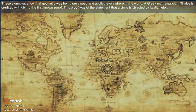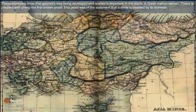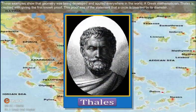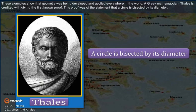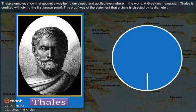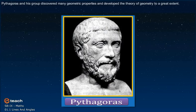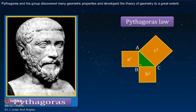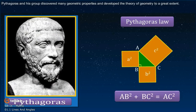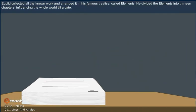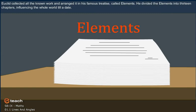These examples show that geometry was being developed and applied everywhere in the world. Thales, a Greek mathematician, is credited with giving the first known proof — that a circle is bisected by its diameter. Pythagoras and his group discovered many geometric properties and developed the theory of geometry to a great extent. Euclid collected all the known work and arranged it in his famous treatise called Elements.